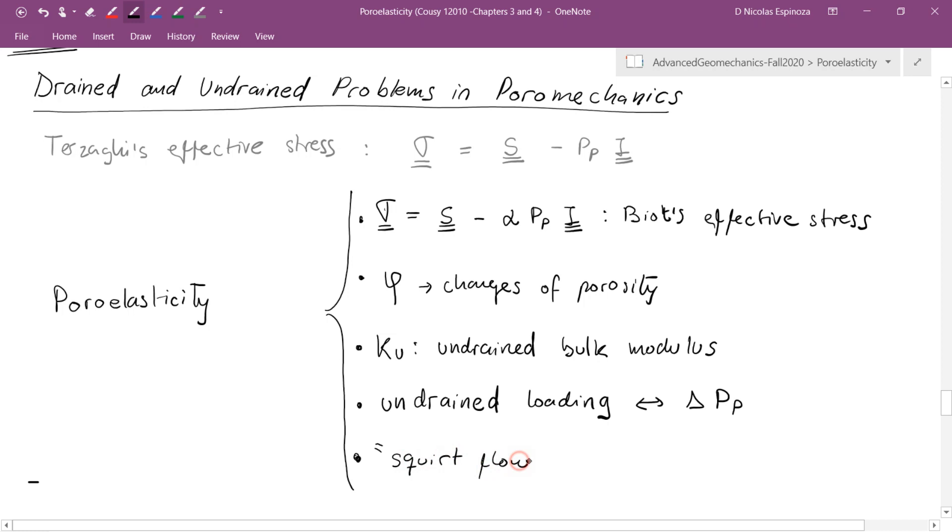In porous solids we're going to see a phenomenon which is called squirt flow, and it is also related to undrained loading. What happens is when we have a wave like for example the P wave that produces a volumetric strain in a porous solid, that volumetric strain is going to compress the fluids wherever the solid is compressing and is going to send those fluids to regions where the solid is expanding.